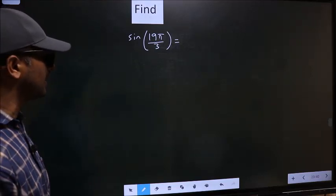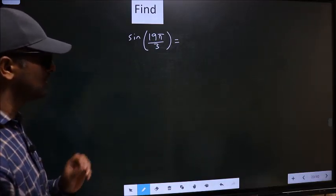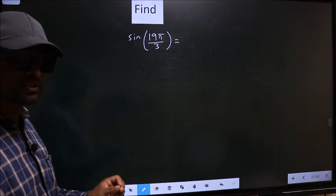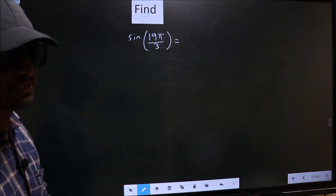Find sin 19π by 3. To find this, we should follow this method.